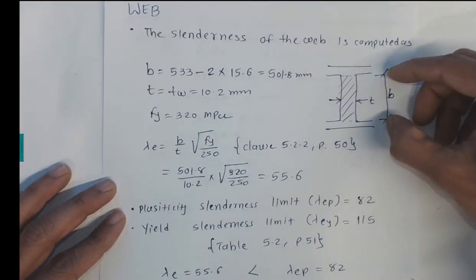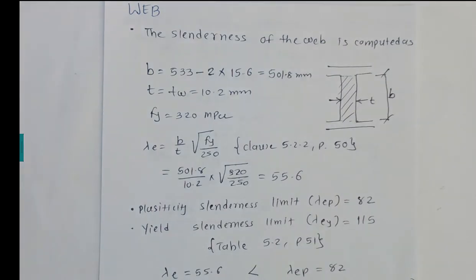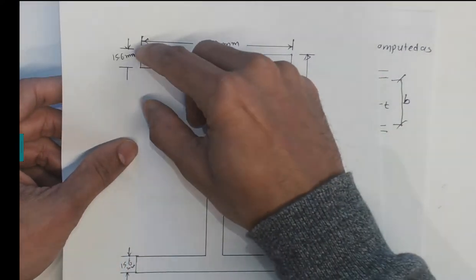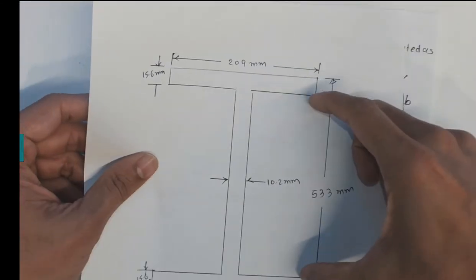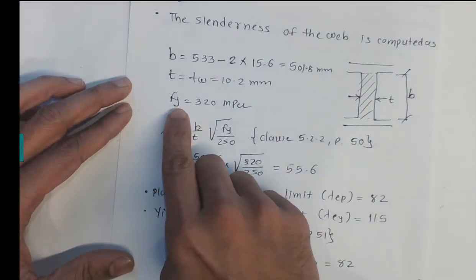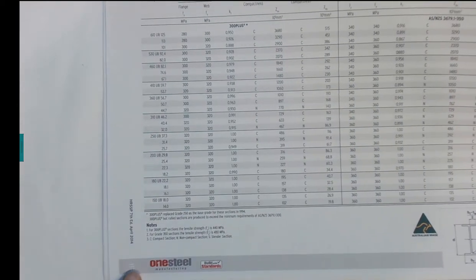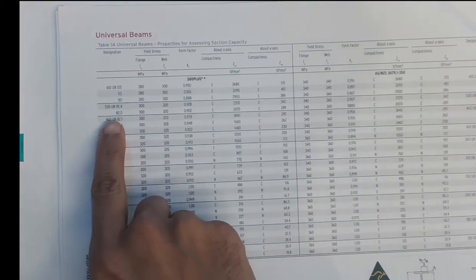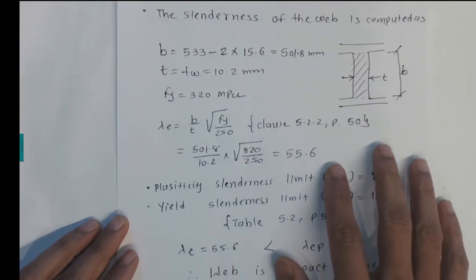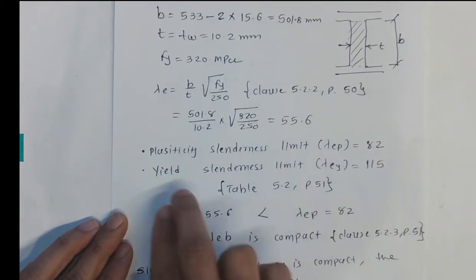Now for the web slenderness, the clear web depth B = D − 2 × TF = 533 − 2 × 15.6 = 501.8 mm, and the web thickness TW = 10.2 mm. From OneSteel tables page 15, the web yield strength FY = 320 MPa. Substituting into the slenderness equation gives λ_E = 55.6.